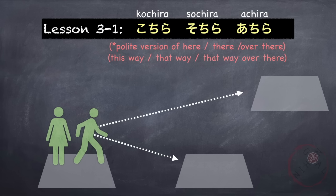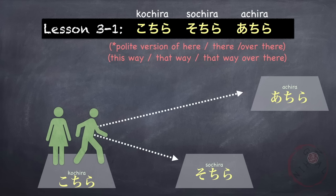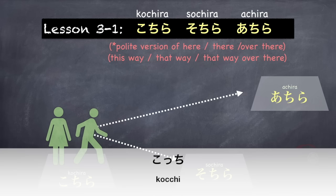The polite way of saying koko is kochira. For soko, it's sochira, and for asoko, it's achira. These words also mean 'this way' or 'this direction.' For example, 'this way' is kochira, 'that way or that direction' is sochira, and 'that direction over there' is achira. The very casual forms are kochi, sochi, and achi.